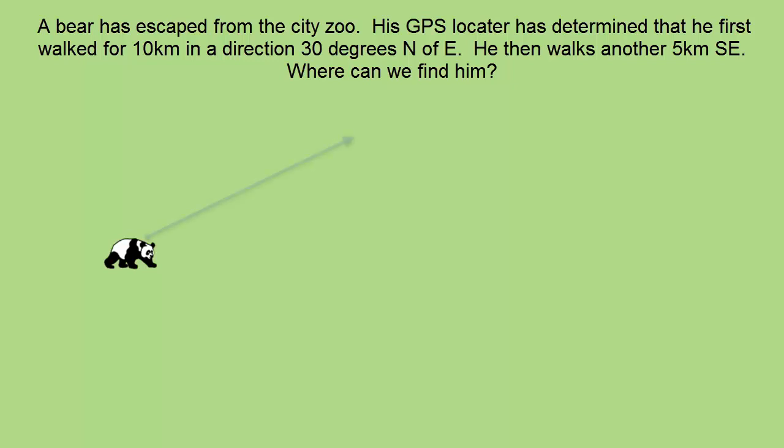Here we've got a bear escaping from the city zoo. He first walks 10 kilometers in a direction 30 degrees north of east, then turns and walks another 5 kilometers southeast. And the question is asking where do we find him in the end, in other words what is the bear's final displacement.